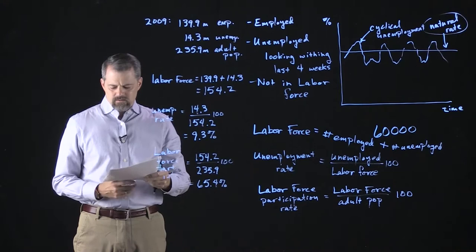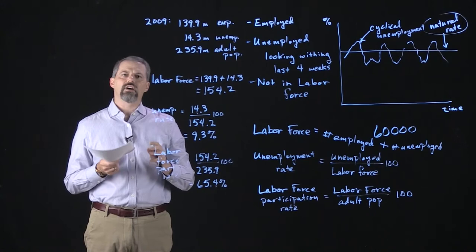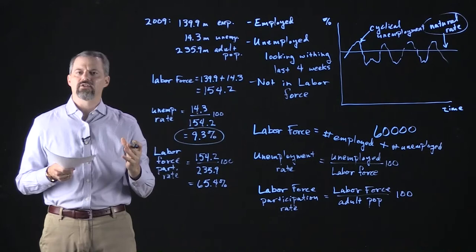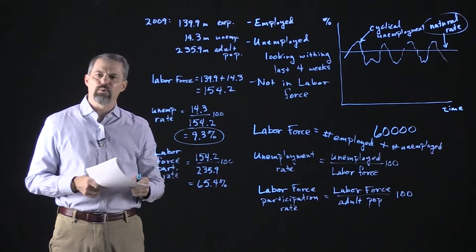Now let's think about whether or not the unemployment rate really measures what we want it to. We have to think about some challenges with interpreting what a number like 9.3% actually tells us. One of the main challenges is interpreting or deciding which category to put somebody in.